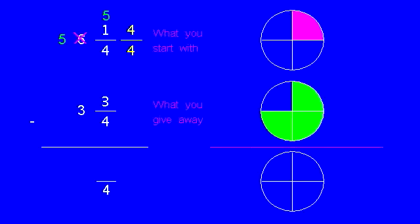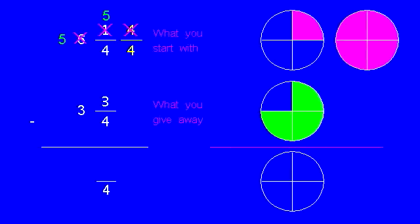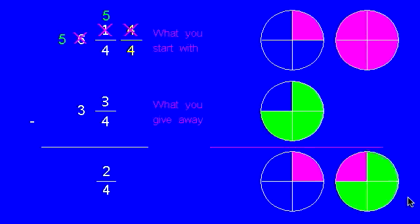So now we have a total of five pieces. One we started with, four we borrowed. So if we give three away, we have two left. And now we only have five wholes. And as usual, we need to reduce the fraction part.